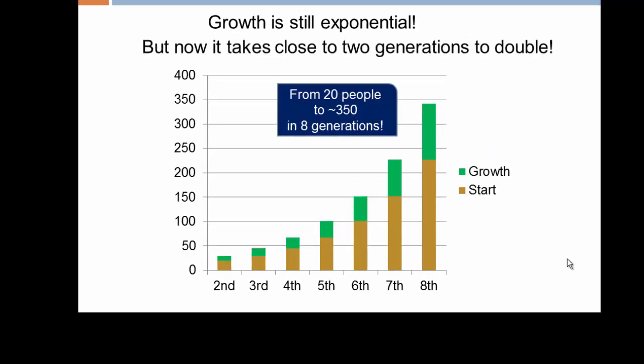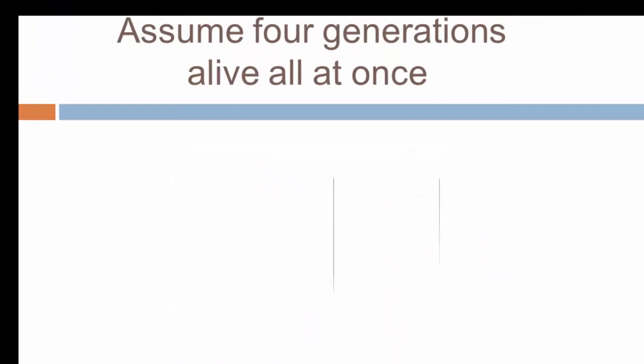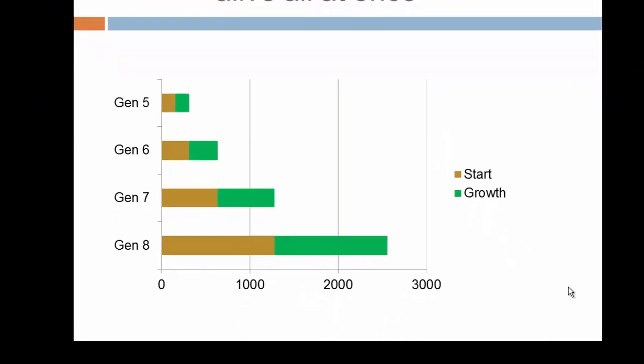Growth is still exponential with a fertility rate of three, but it now takes closer to two generations to double. As long as fertility is above two, growth will be exponential. Now let's change our assumptions and look at four generations alive at once — generations five through eight. If we lay these on their side, the most recent generation is the broadest, while generation five is quite narrow relative to generation eight.